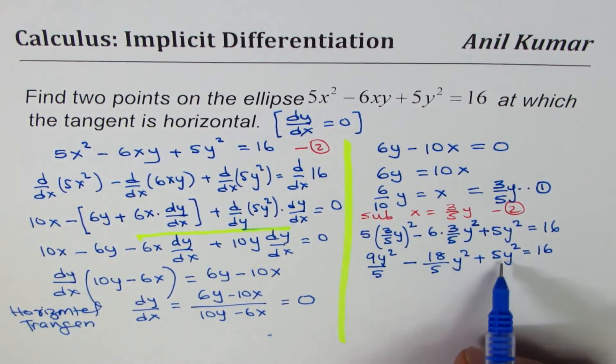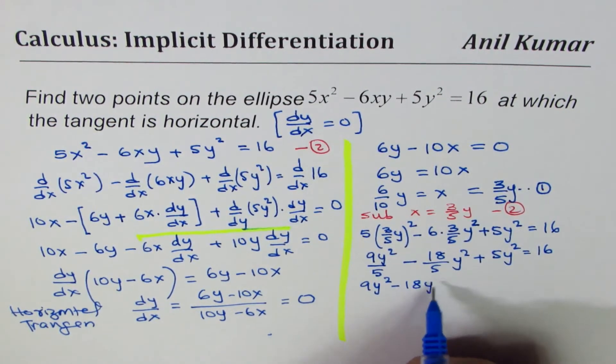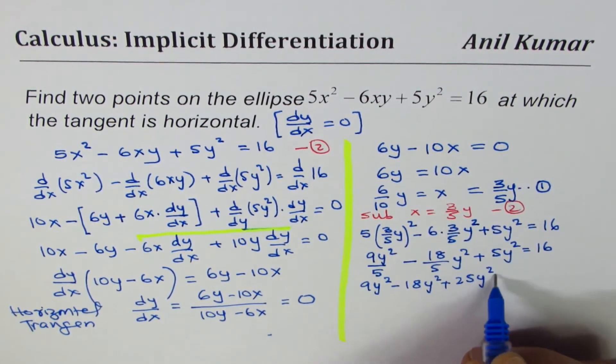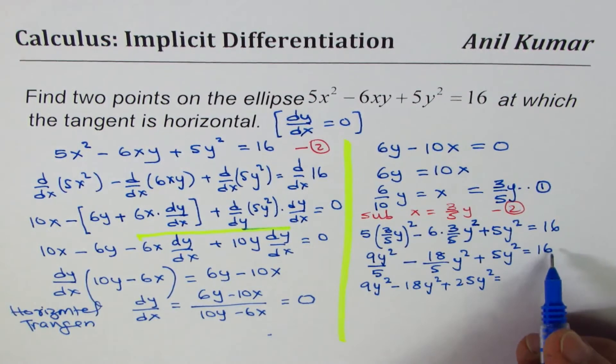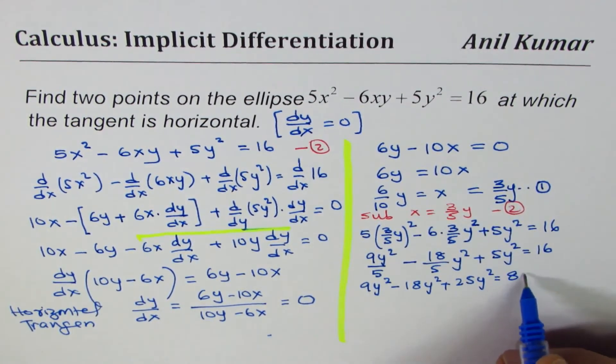Now, we can multiply everything by 5, so we get 9y² minus 18y² plus 25y² equals to 5 times 16, or 80.